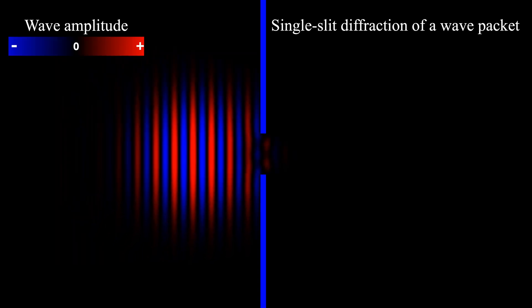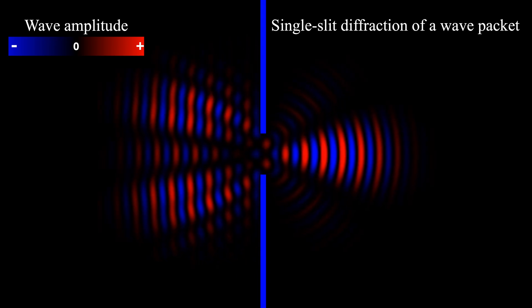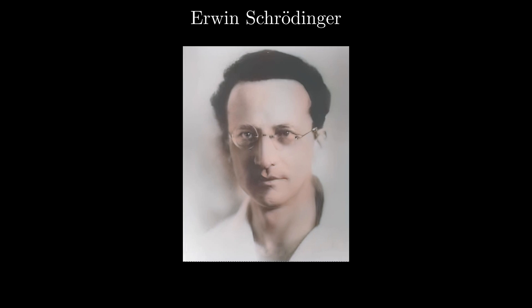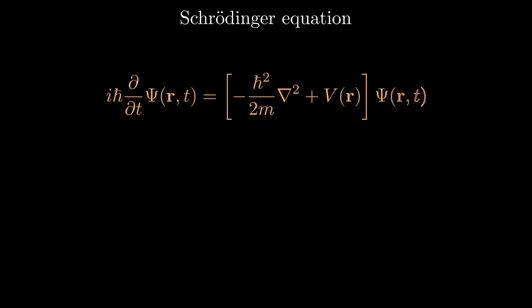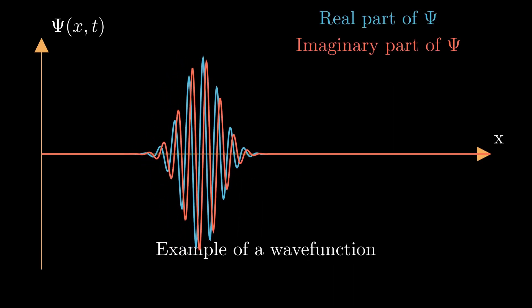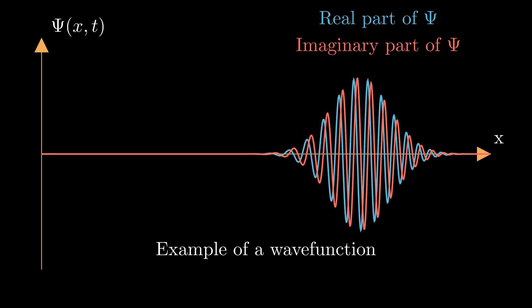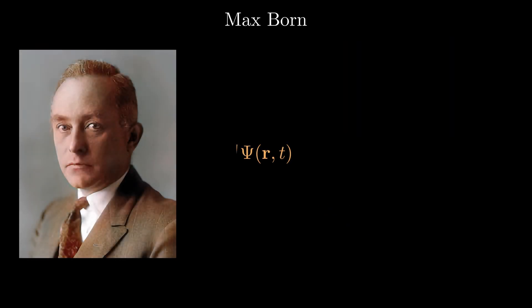However, the full implications of this wave-particle duality awaited further developments. In 1926, Erwin Schrödinger unveiled a groundbreaking 3D wave equation that described the behavior of matter waves. This equation allowed scientists to calculate a particle's wave function, a mathematical entity that encodes the quantum state of the system. Shortly after, Max Born provided the crucial interpretation that the squared modulus of the wave function represents the probability density of finding the particle at a specific location.